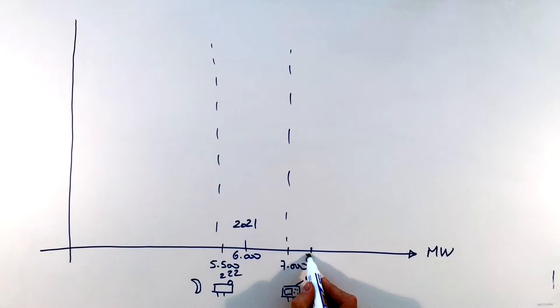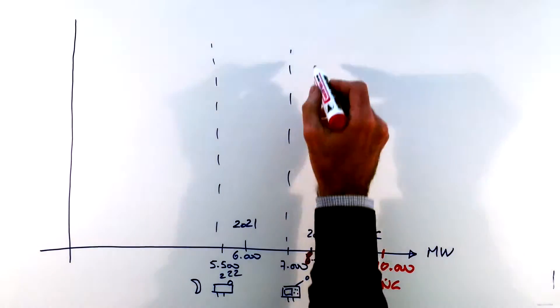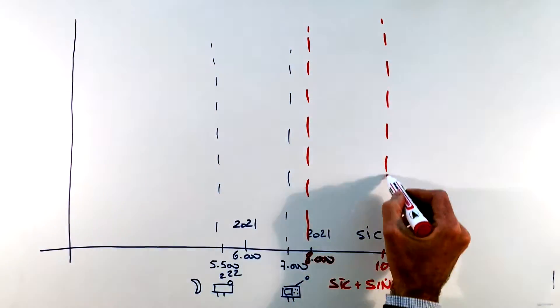In 2021 demand is going to be expected to be between 6,000 and 8,000 in the SIC. Now if we consider SIC plus SING in 2021 demand is expected between 8,000 and 10,000 megawatts.